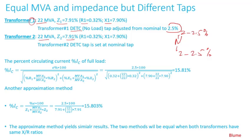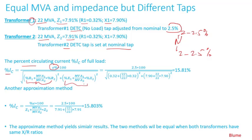Transformer 2 has the same MVA and same impedance, but is set at nominal tap. So the turns ratios do not match. There is a formula for calculating the percent circulating current — the difference in voltage between the two transformers times 100%, divided by the square root of the combined impedances, with resistances and reactances placed on the same base.